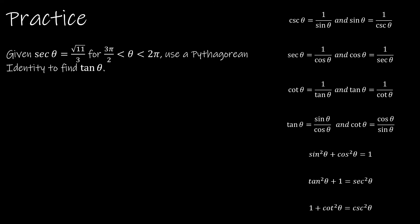Let's take a look at a practice question where I can use a Pythagorean identity. So say I'm given that secant of theta is equal to radical 11 over 3 for the domain of 3 pi over 2 to 2 pi. And I'm going to use the Pythagorean identity to find tangent of theta.